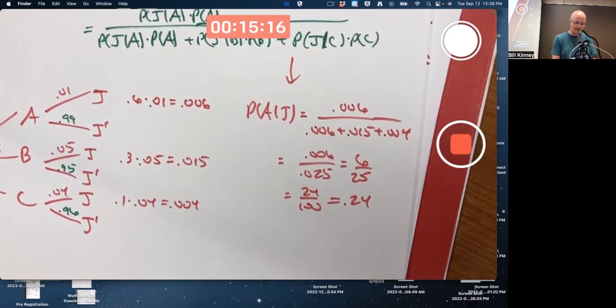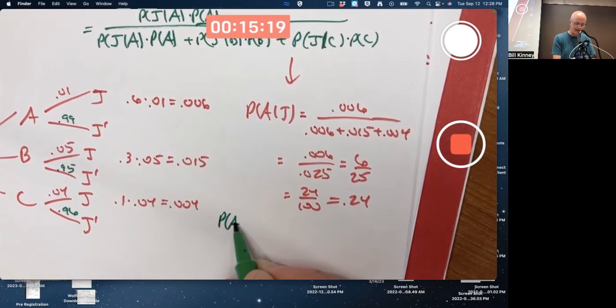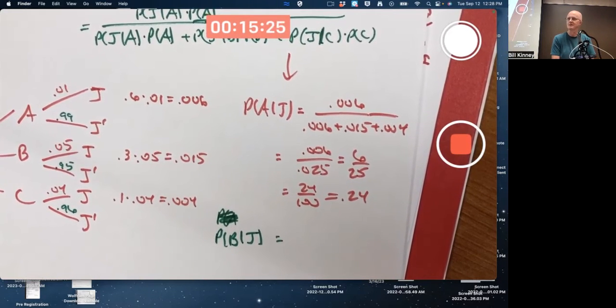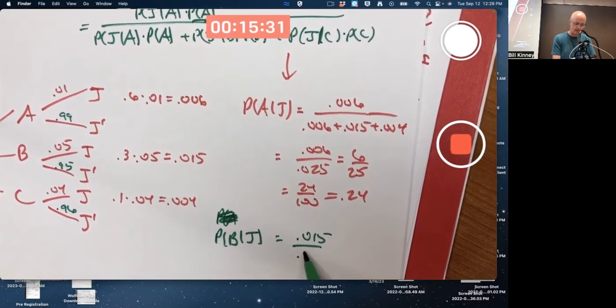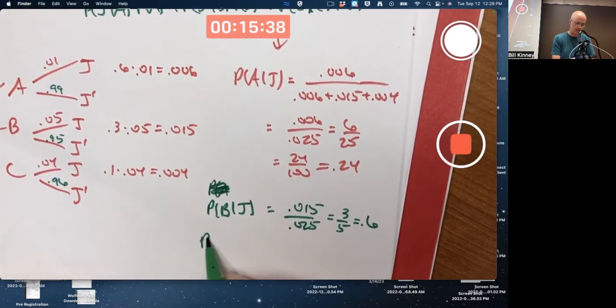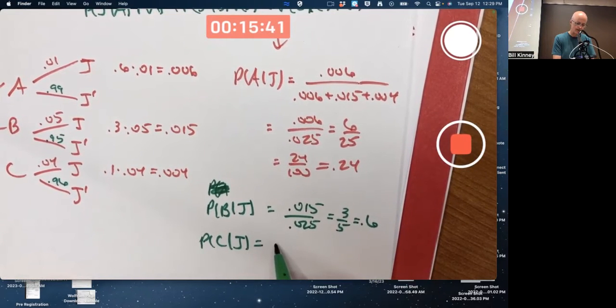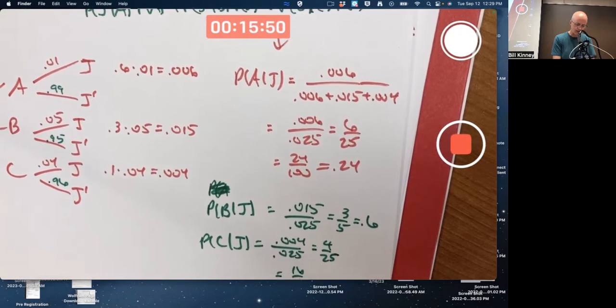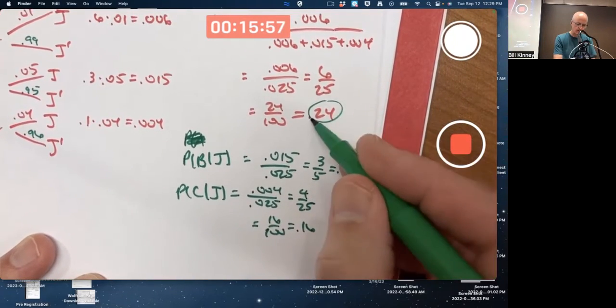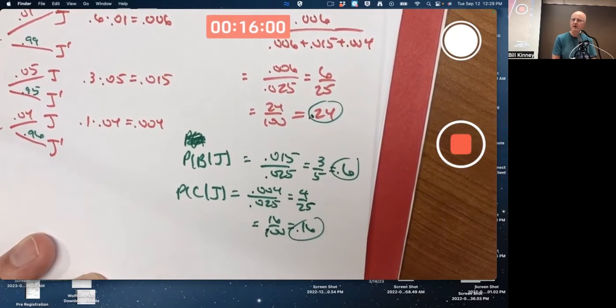And actually, from the setup, the other ones are pretty easy to figure out. The bottom stays the same. It's the top that changes. For the probability that it's B, if you know it jams, that's point zero one five divided by point zero two five. Fifteen twenty fifths, which is three fifths or point six. And the probability that C, given that it jams, is point zero zero four over point zero two five, four twenty fifths, which is sixteen one hundredths or point one six.